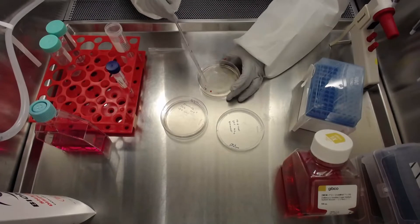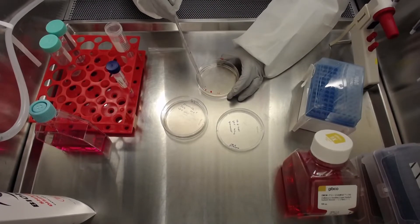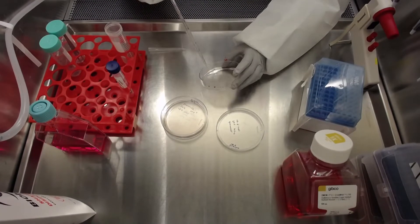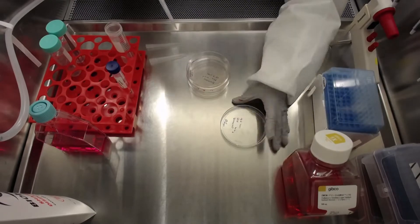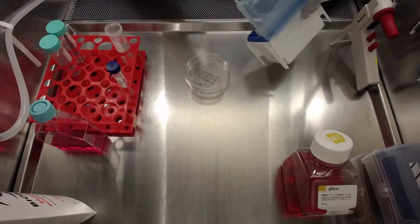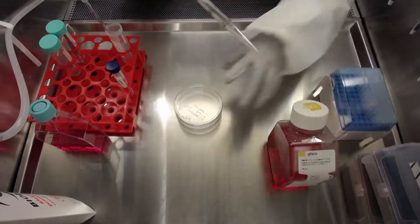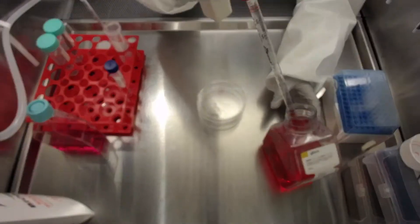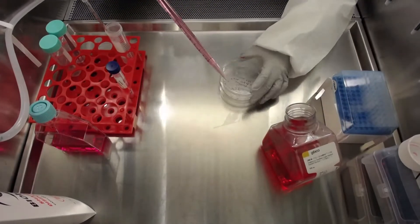We start with two 10 centimeter dishes of human iPSCs at 80% confluency. There should not be any spontaneously differentiated cells in the culture. In case there are some differentiated regions, follow the steps of our removing spontaneous differentiation video to remove them before proceeding to the next step.